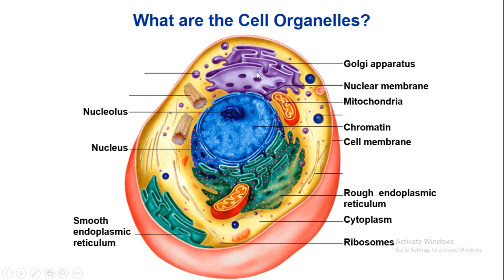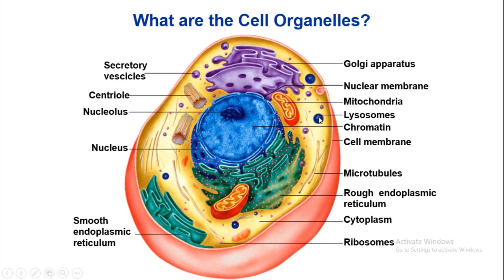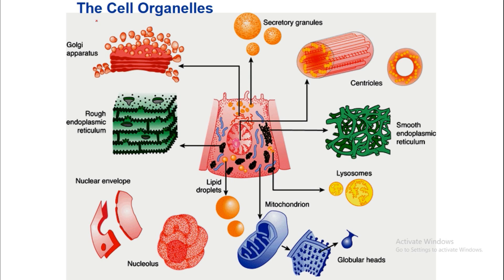This is the Golgi apparatus. These are the secretory vesicles which are released from the Golgi apparatus. This is the centriole. These are the microtubules which maintain the shape of the cell. This is the lysosome, which contains various types of digestive enzymes. These are all the cell organelles.